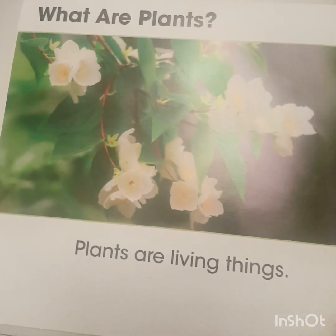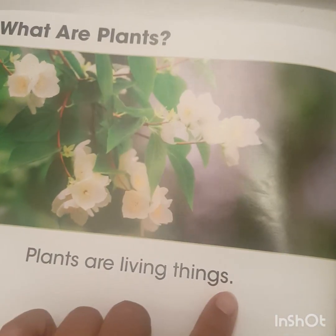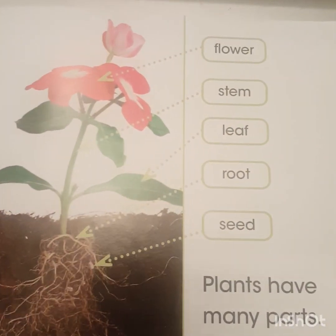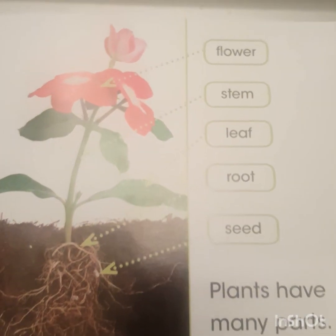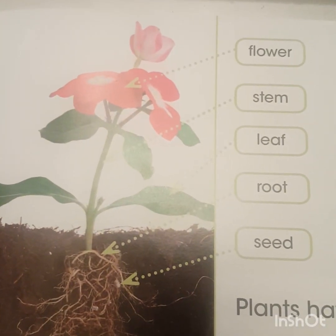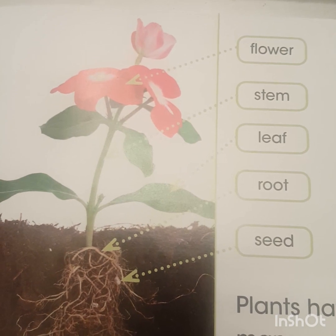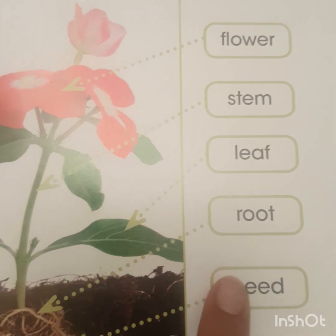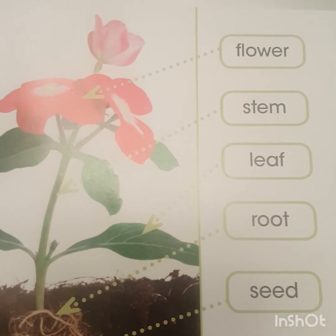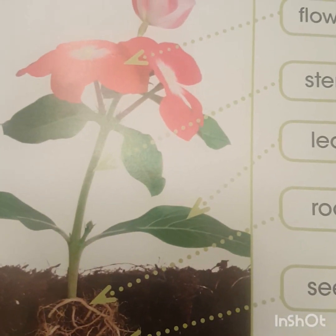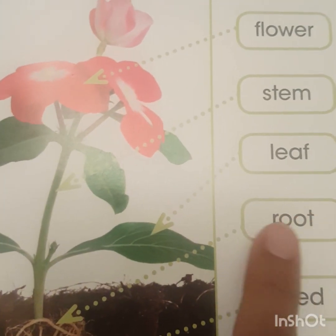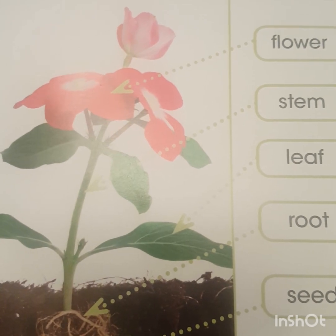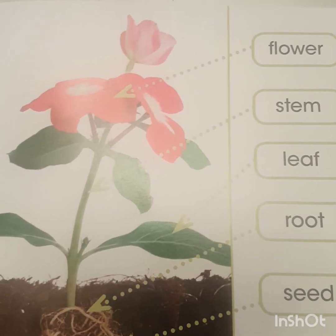What are plants? Plants are living things. Plants have many parts. I'm noticing that this page is teaching us the different parts of a plant. The first label here is seed, and the seed is below the ground, as well as the roots. The roots are this string-like material you see here, and they are below the ground as well.